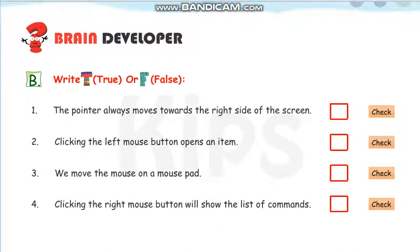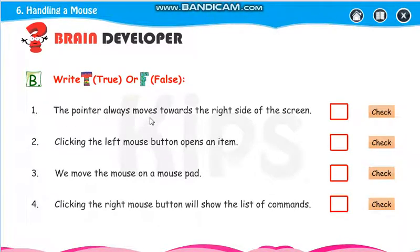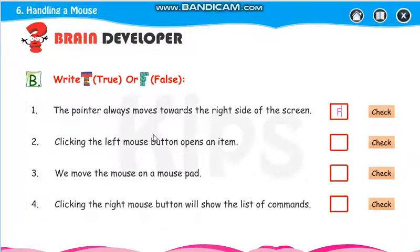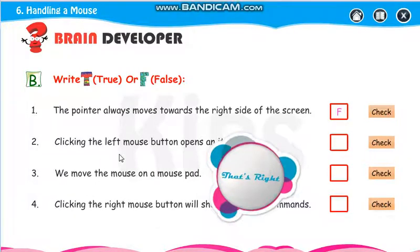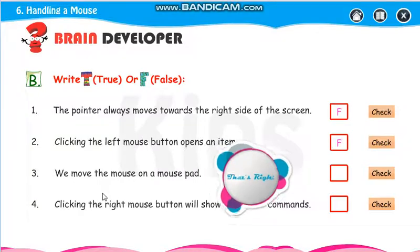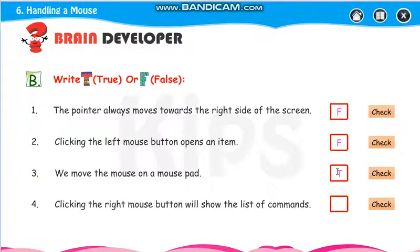Write T for true and F for false. The pointer always moves towards the right side of the screen — false, it can move anywhere. Clicking the left mouse button opens an item — false, it will select the item. We move the mouse on the mouse pad — true, for better movement.